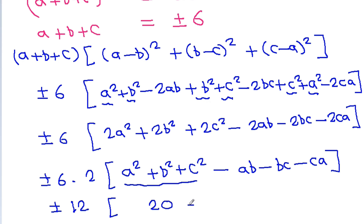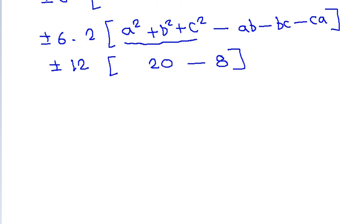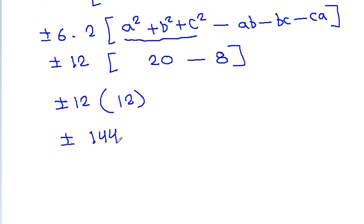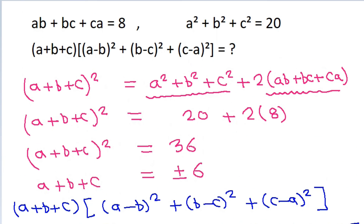This simplifies to plus or minus 6 times 2 times 20 minus 2 times 8, which is plus or minus 6 times 40 minus 16, which is plus or minus 6 times 24, giving us plus or minus 144. So the answer is 144 or minus 144.